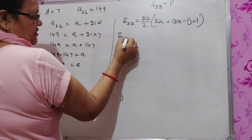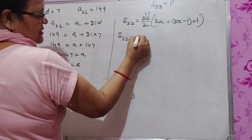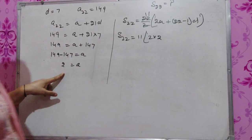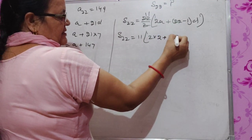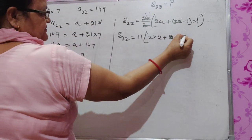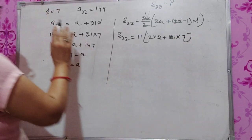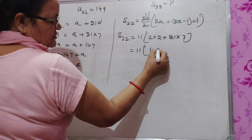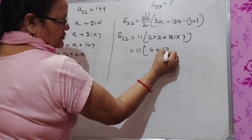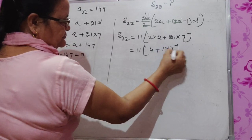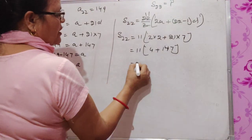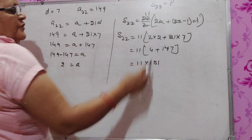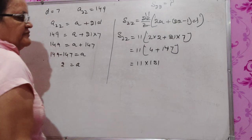S_22 equals 11 times 2a. A equals 2, plus 21d. d equals 7. So 11 times [4 plus 147], which is 11 times 151.